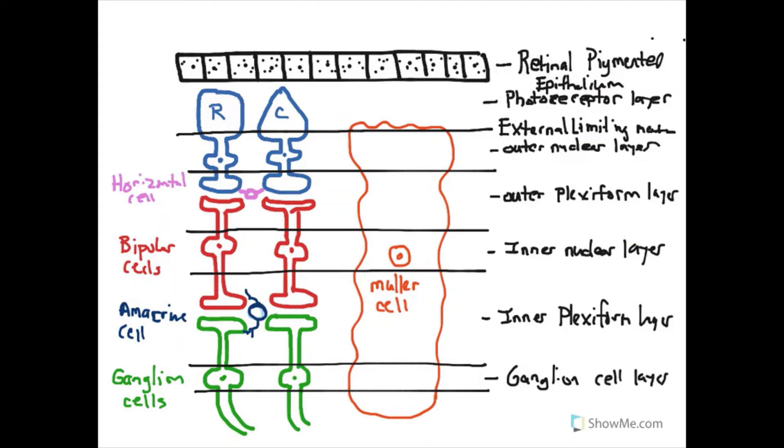Now we just have two more. I'm going to draw one line at the bottom here. We're going to draw two more. We need to know the nerve fiber layer, and then lastly this little membrane, the inner limiting membrane.